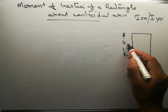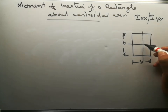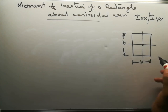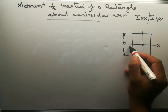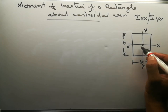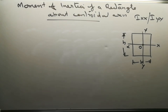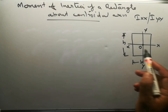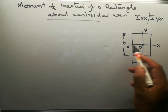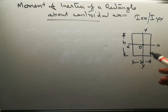We know the centroid is at the geometrical center — let this be the centroid. This is the XX axis and the YY axis. This will be the centroid, or G. Now, we need to find the moment of inertia Ixx, that is about the XX axis — the rotation of this rectangle about the XX axis.